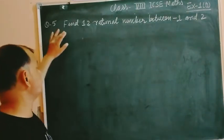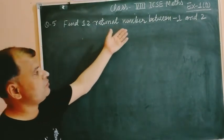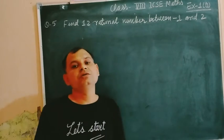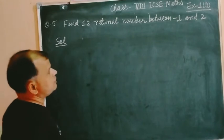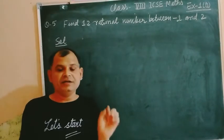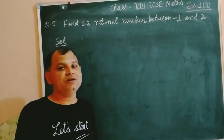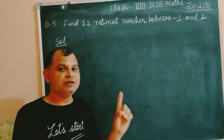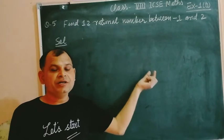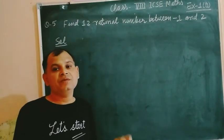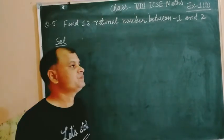The question is asking to find 12 rational numbers between minus 1 and 2. As we discussed earlier, if we want n rational numbers between two given numbers, then first we make their denominator same and second we multiply the numerator and denominator of each number by n plus 1.